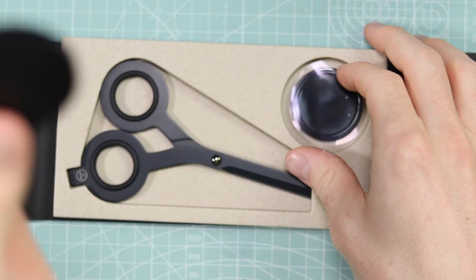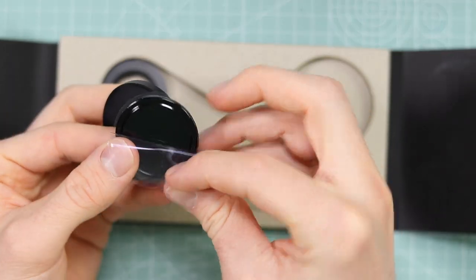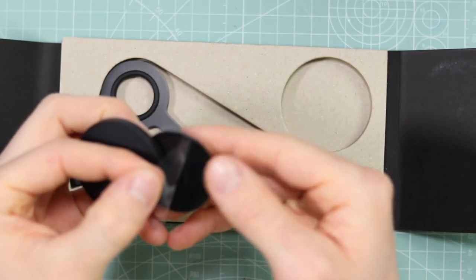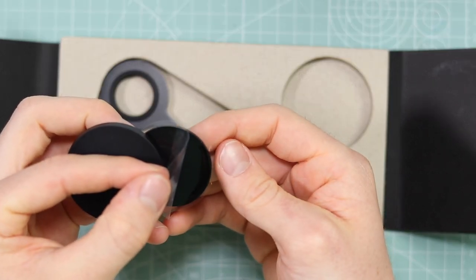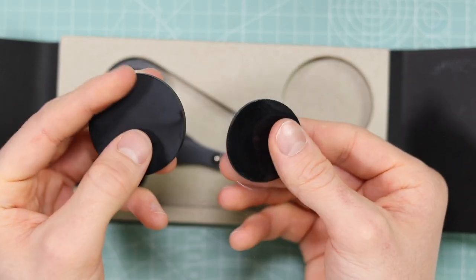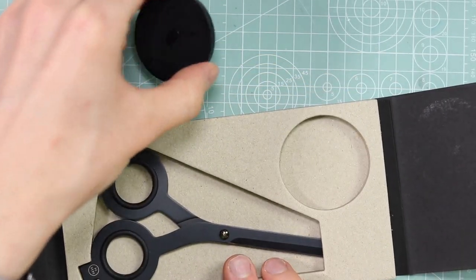They've also included this little sort of weird feeling gooey pad that is presumably going to stop scratches, but also kind of feels really disgustingly sticky. So I'm not sure what that is, but I'm definitely never going to use that. It's so smooth on the base here that it's just not going to scratch any surface that it's on.